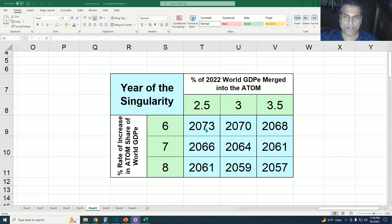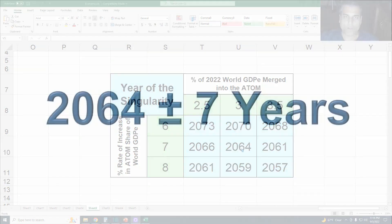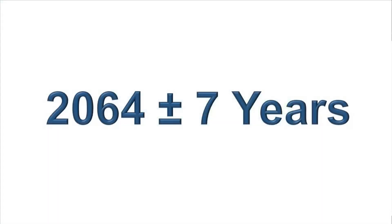The band is tightening up, making the asymptote convergence problem less necessary to address. So the estimate for the technological singularity as of 2022 is 2064 plus or minus 7 years. The bell curve runs from 2057 to 2071.